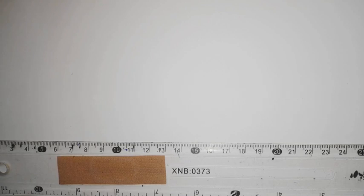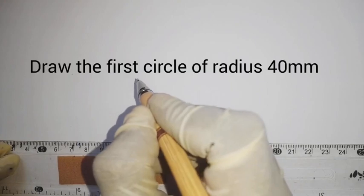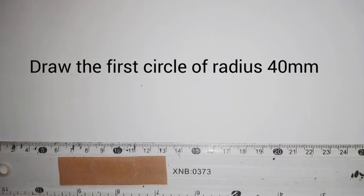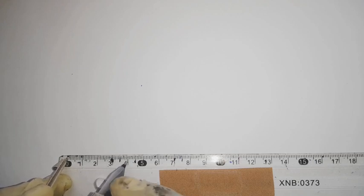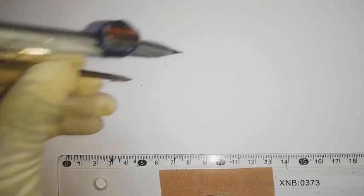How do you go about this? First, we are going to draw the first circle. We can draw a circle by starting with a point, so let's establish a center point here. Then we measure radius 40 millimeters. Once we have 40 millimeters, we draw our circle.